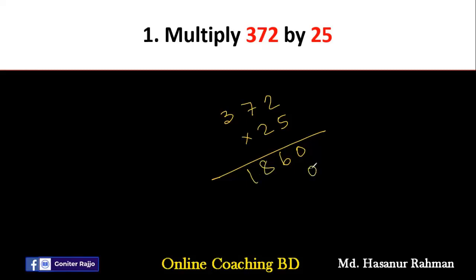Now we have to put a 0 here. 2 times 2 is 4. 2 times 7 is 14, so 1 will be carried. 2 times 3 is 6 plus 1, that is 7.